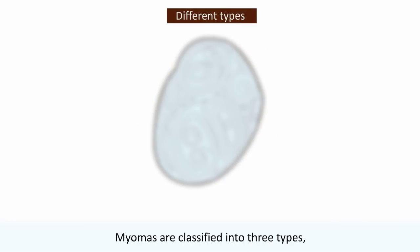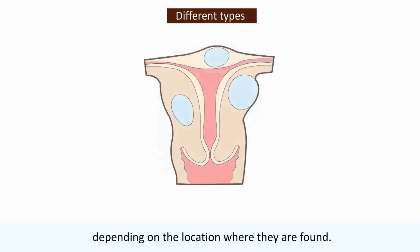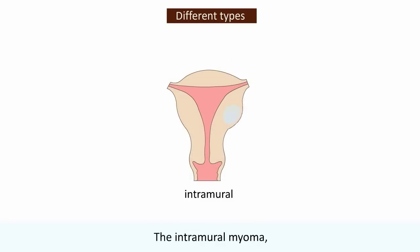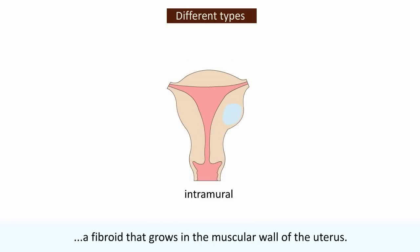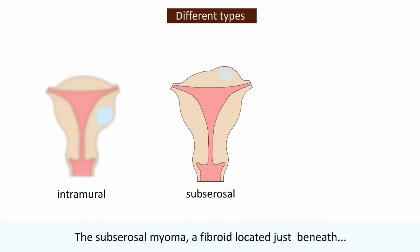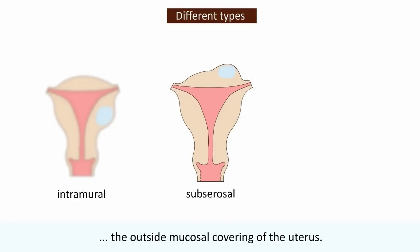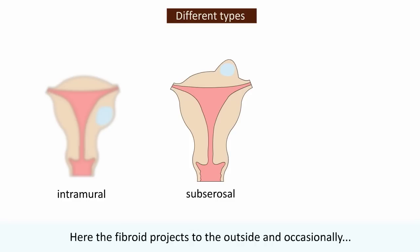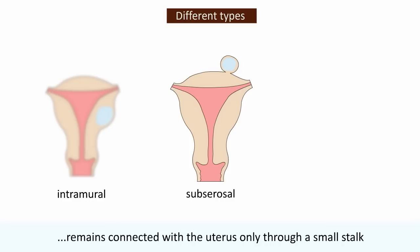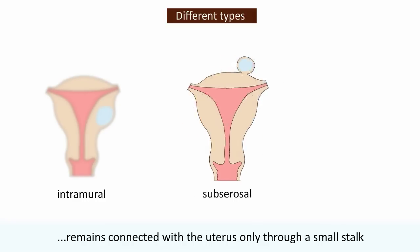Myomas are classified into three types depending on the location where they're found. The intramural myoma is a fibroid that grows in the muscular wall of the uterus. The subserosal myoma is a fibroid located just beneath the outside mucosal covering of the uterus, where the fibroid projects to the outside and occasionally remains connected with the uterus only through a small stalk.